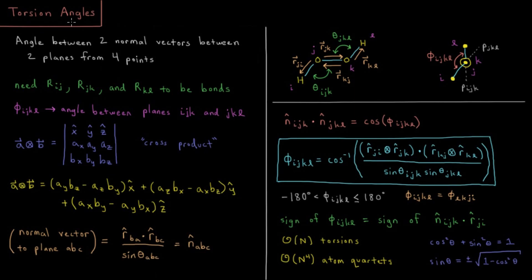A torsion angle we could define as the angle between two normal vectors between two planes from four distinct points.